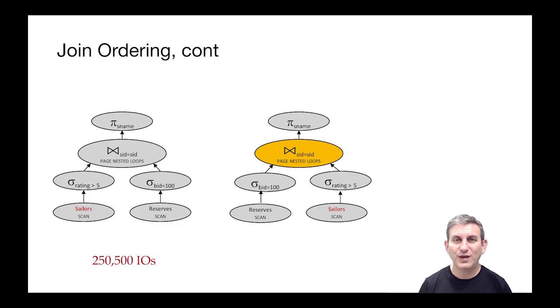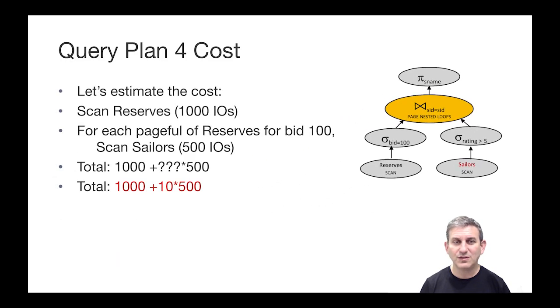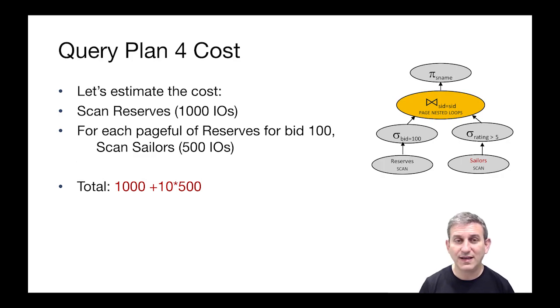What if we change the join order? That's the next thing we can measure. Let's look at the cost of this one. We're going to scan Reserves this time, that's a thousand. For each pageful of Reserves that matches on boat ID 100, we scan Sailors, which is 500.